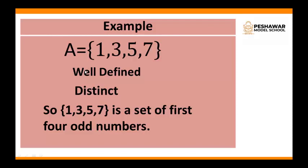The second word is well-defined. As you know, these numbers are odd numbers. Odd numbers are the numbers which are not divisible by 2. You have already learned in junior classes that odd numbers are not divisible by 2. So in this example, 1, 3, 5, 7 are all not divisible by 2, which means these numbers are odd numbers. So 1, 3, 5, 7 is well-defined because all these numbers are odd numbers.